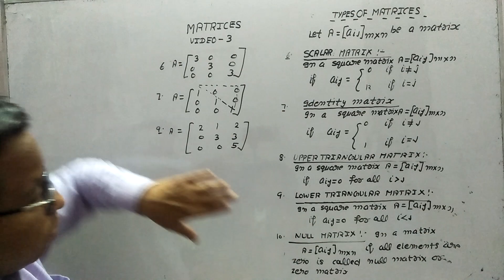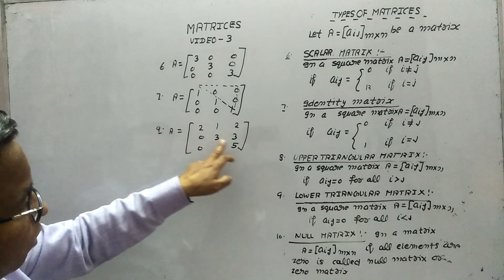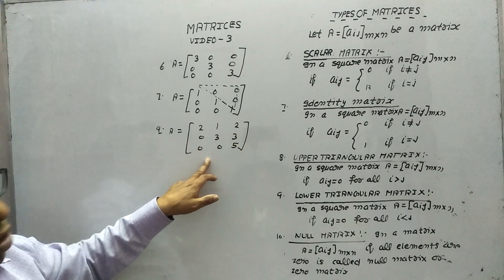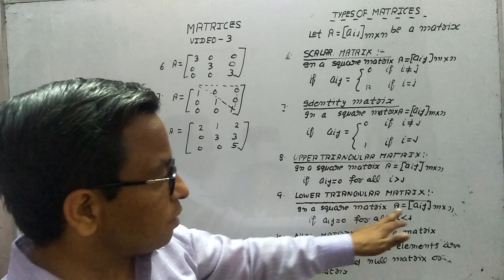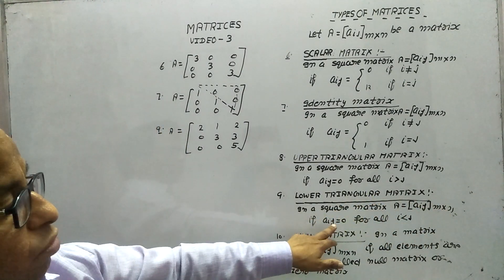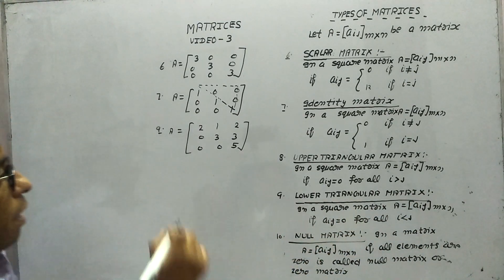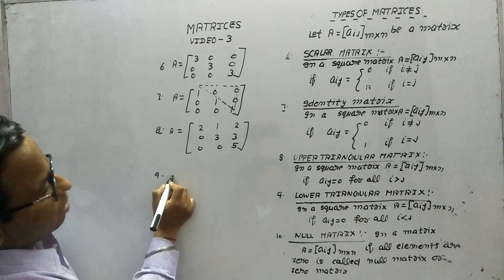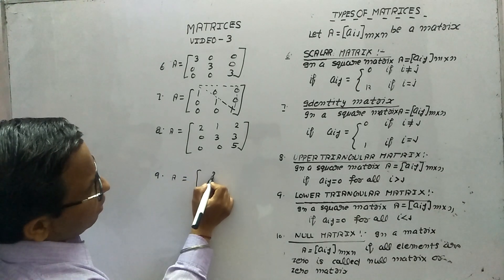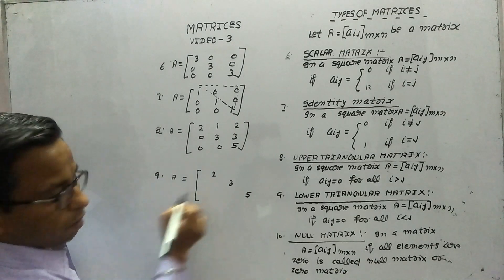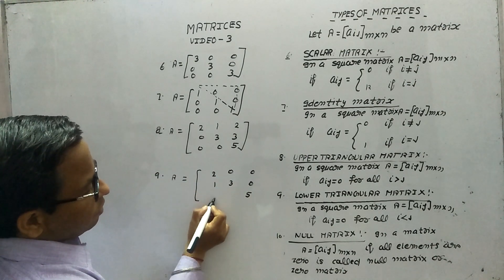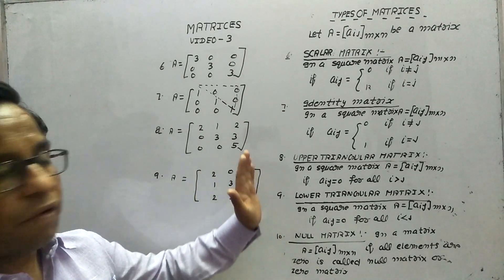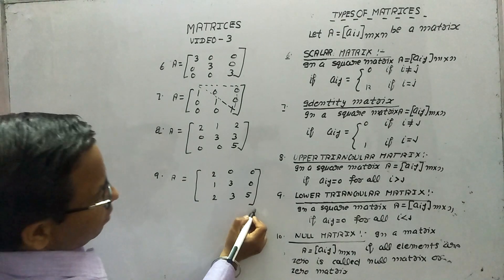Lower triangular matrix is just the opposite of upper triangular. The elements above the diagonal are equal to 0, but those below are not. So for a lower triangular matrix Aij M by N, Aij equals 0 for all i less than j. Example: A = same structure with diagonal elements not equal to 0, and the upper elements 0. This is the example of a lower triangular matrix, and it is also a square matrix.